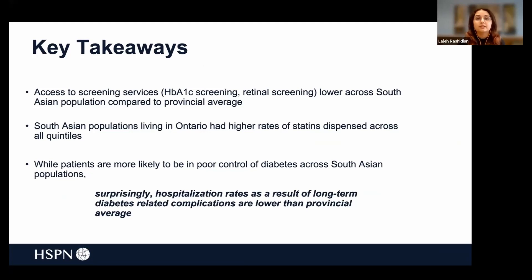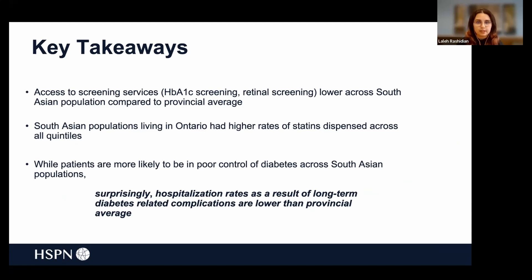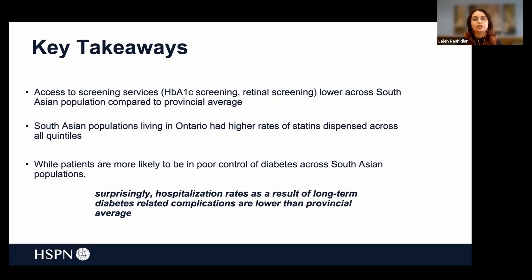Overall, access to screening services — including HbA1c screening and retinal screening — was lower across South Asian populations compared to the provincial average. However, South Asian populations in Ontario had higher rates of statins dispensed across all quintiles of material deprivation. And even though patients were more likely to be in poor control of diabetes, we saw the surprising finding that hospitalization rates as a result of long-term diabetes-related complications were lower than the provincial average.